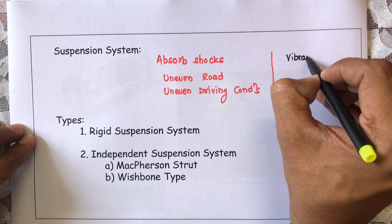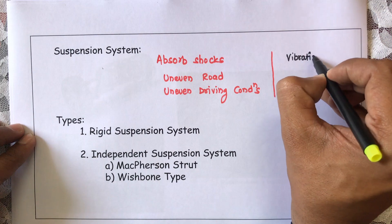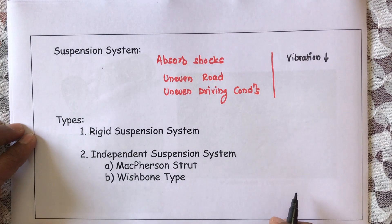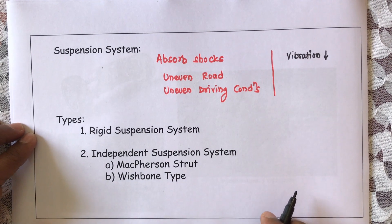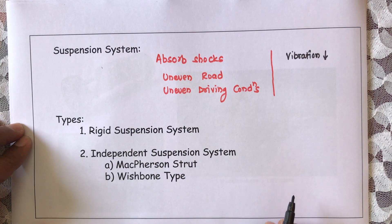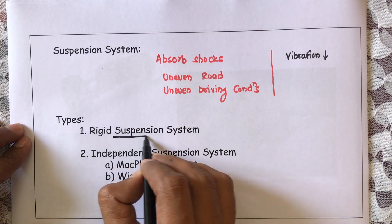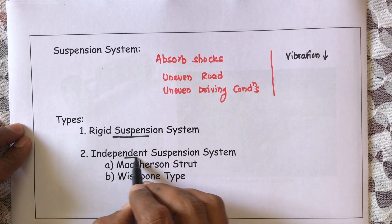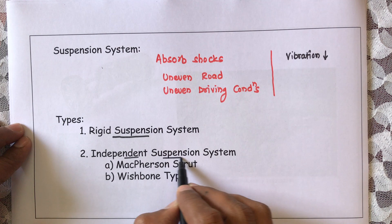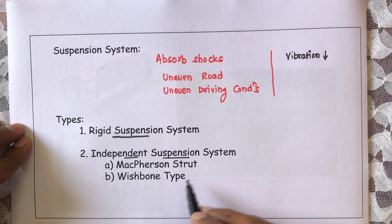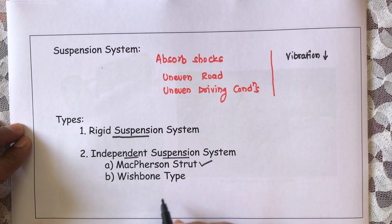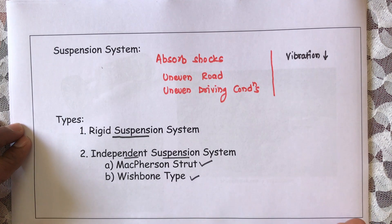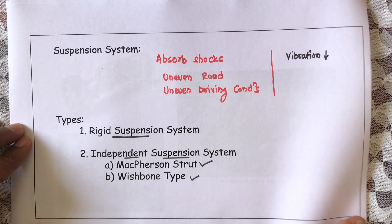That suspension system may be classified as a rigid suspension system or a dependent suspension system. That may be a McPherson strut mechanism or a wishbone type of suspension system.